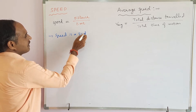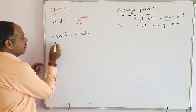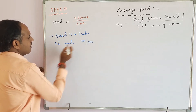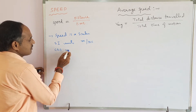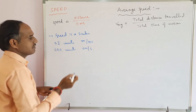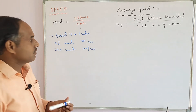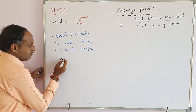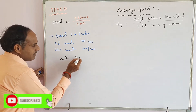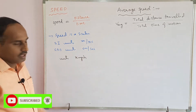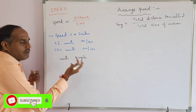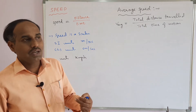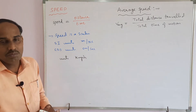Speed is a scalar quantity. The SI units of speed are meter per second, and the CGS units are centimeter per second. In problems we also use the practical unit kilometer per hour (kmph). Even if the speed is given in kilometers per hour, your final answer should be expressed in meter per second.